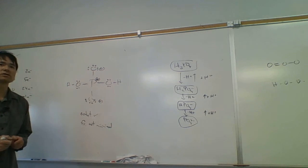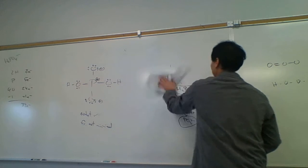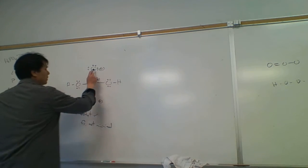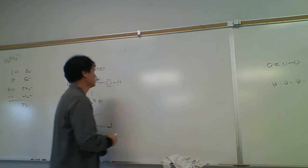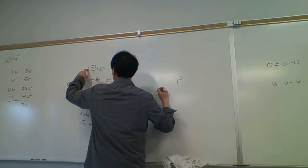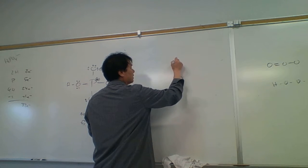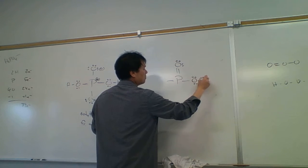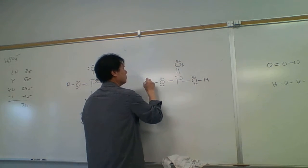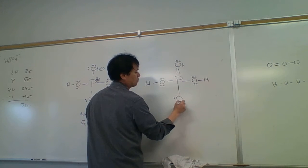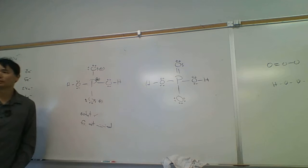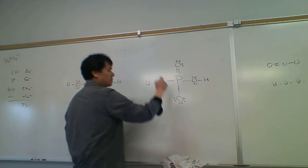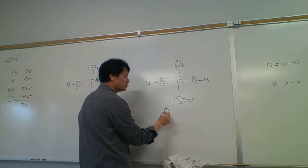One trick to lowering the formal charge is to create a double bond. If I take a lone pair from the top oxygen and make it a bonding pair with phosphorus, forming a double bond, then in the resulting structure the formal charge is minimized — zero on everything except the bottom oxygen.